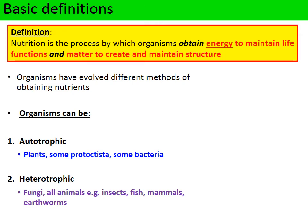We need to start with a definition for nutrition. It's really the process by which organisms do two things. They obtain energy to help maintain life functions — things like absorbing glucose, which is respired to make ATP that drives enzyme reactions and protein synthesis. Nutrition also means the taking in of molecules to allow matter to be created and maintained, so things like amino acids are needed to build proteins that create cells and structures.